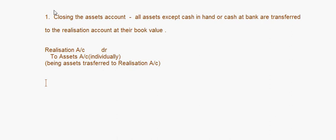The reason why cash in hand and cash in bank are not transferred to the realization account is that these assets are already in liquid form — you don't need to realize them. Assets like fixed assets, stock, or intangible assets like goodwill have to be realized — they have to be sold off and realized in cash. But cash in hand and cash at bank are already liquid, so you don't transfer them.